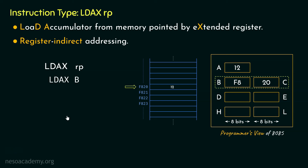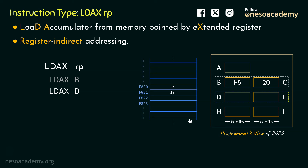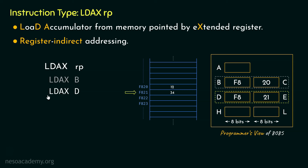Let me show you another example. Say we would like to execute the instruction LDAXD. This time, we will be talking about a memory location pointed by the DE register pair. Suppose at location F821 we have the value 34. If we want this value loaded in the accumulator register, within the DE register pair we first load the address of memory location F821. Once this is done, the DE register pair is pointing to that memory location, and executing LDAXD will load the value 34 into the accumulator register.